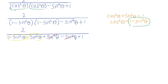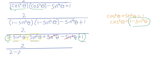Collecting the remaining like terms: we have negative sin²θ and another negative sin²θ, which combine to give negative 2sin²θ. Adding the constant terms gives 2 - 2sin²θ in the denominator.